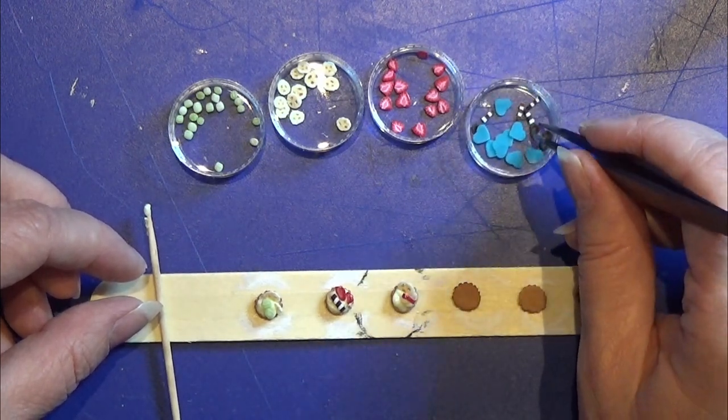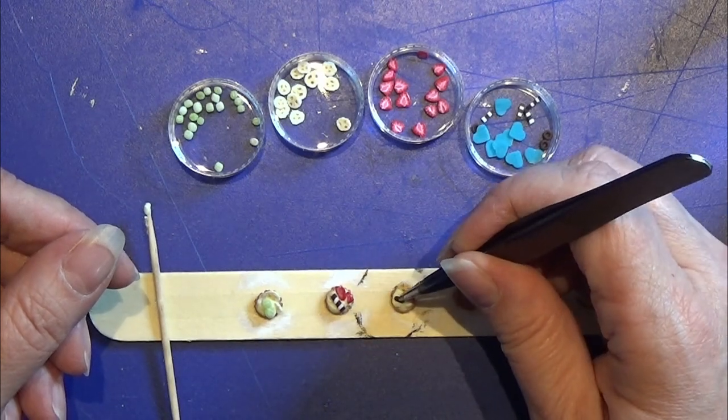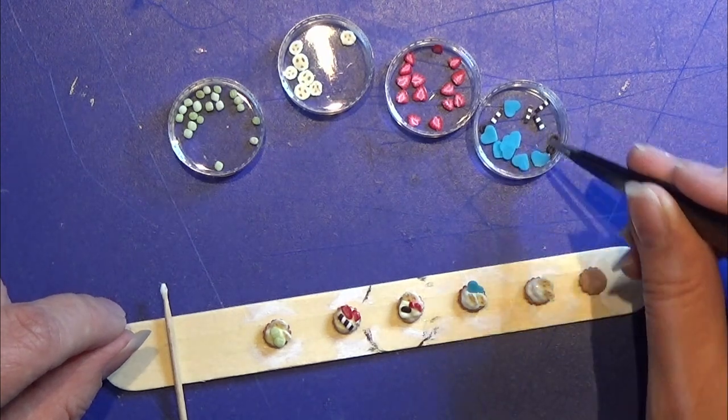The dessert topping master will dry in around 10 minutes. So you have a little time to work with it and then you just leave them to dry.